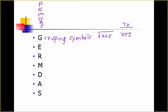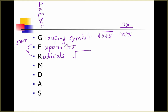Most of the rest of GERMDOS is the same as you're used to. The E is still exponents. What we've added is the R, which is for radicals. Later this year you will see more radicals — the square roots of things, cubed roots of things. Exponents and radicals have the same importance, so when you run into them in expressions, whatever comes first as you're going along is what you do first.